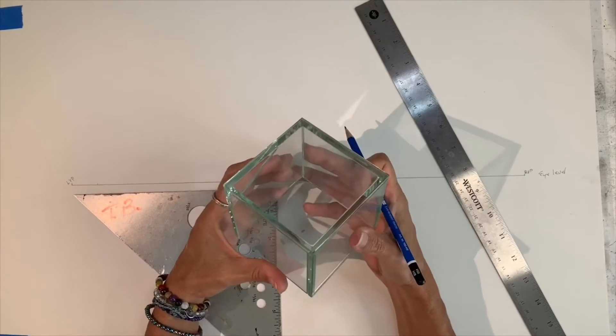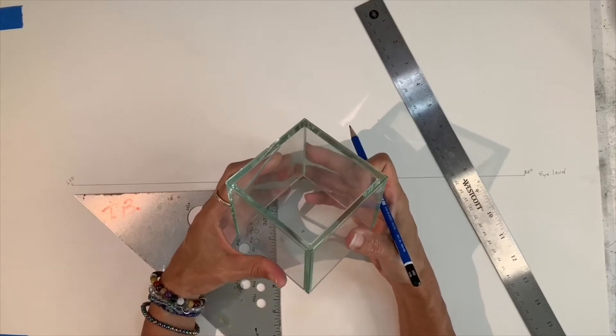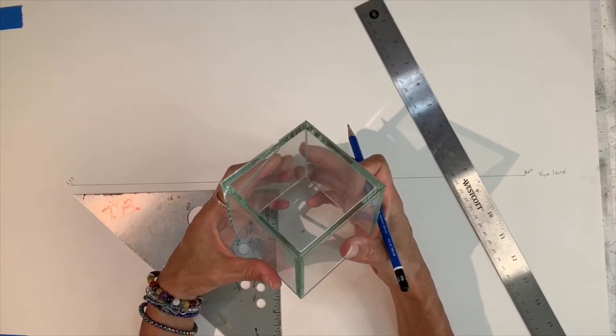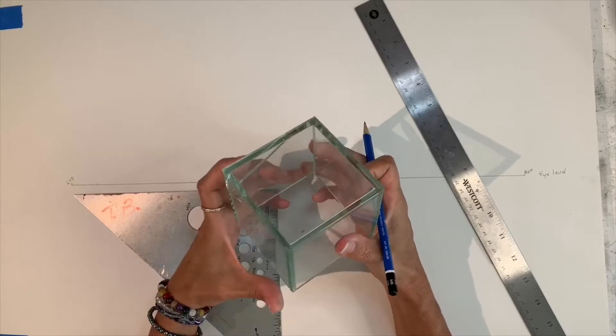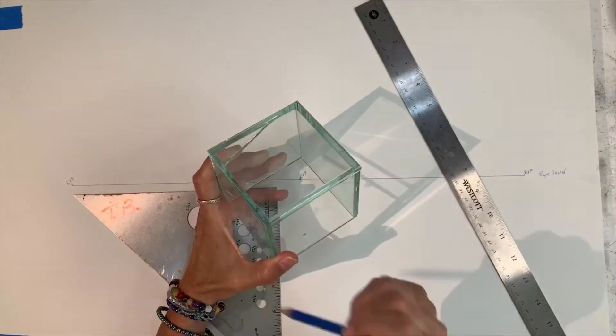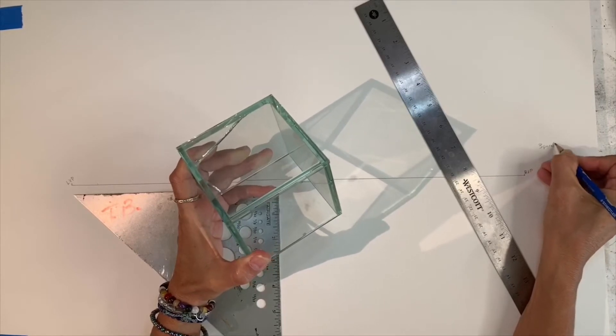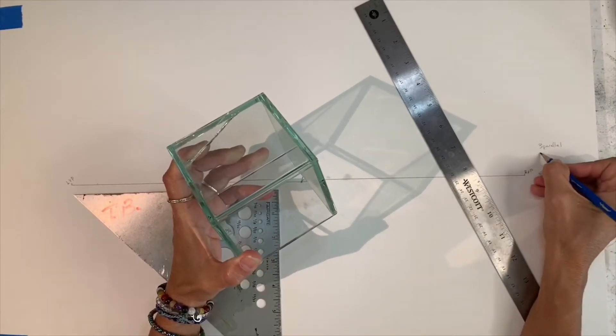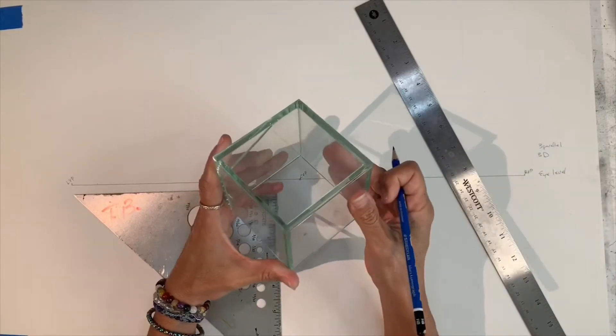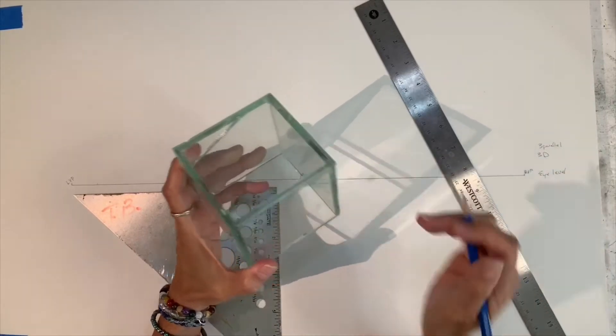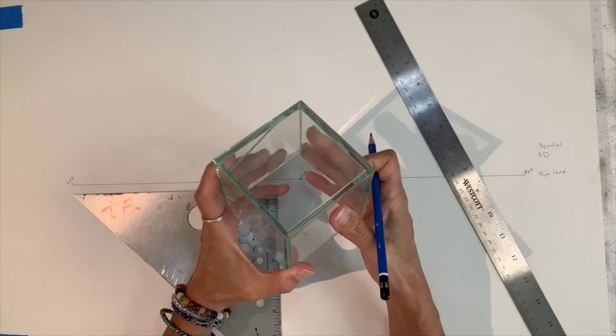So in dealing with a cube, if we wanted to draw a cube in space, one set of those three sets of parallel lines—so there's three sets in a three-dimensional object. In one-point perspective, one of those sets will converge to a central vanishing point.